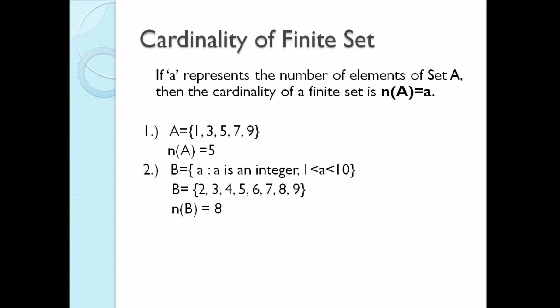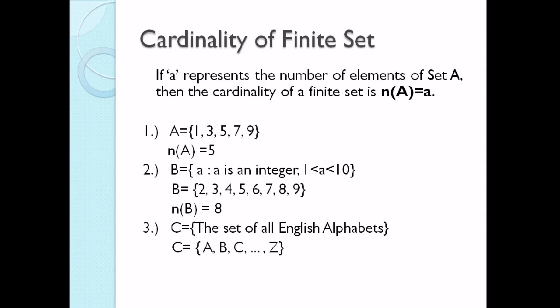For our last example, set C is the set of all English alphabets. We just list all the letters — A, B, C up to Z. So therefore, how many letters are there in an English alphabet? There are 26.